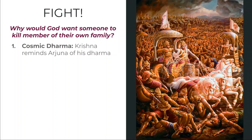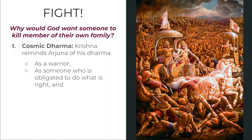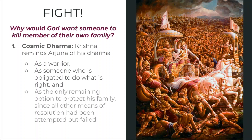Krishna is going to remind Arjuna of his duty as a warrior — that he is serving a function in a larger context towards a certain goal. As a warrior for the Pandavas, he is obligated to do what is right. Krishna reminds him that they have not just jumped into battle; they have really exhausted all other peaceful possibilities for resolving this conflict. So this is the only remaining option to protect his family, since all other means of resolution have been attempted but failed. This is not an advocation of violence in general, but something that has to occur for the greater good since all other attempts have failed.